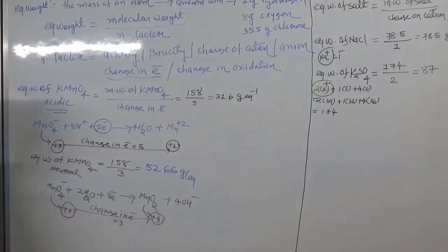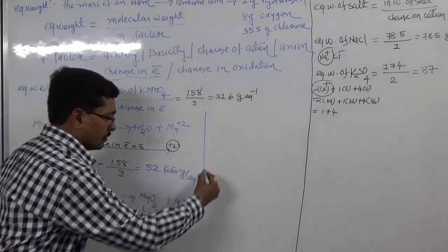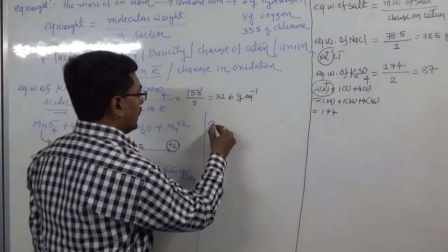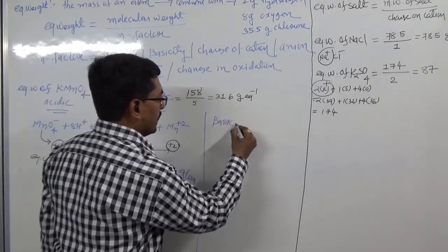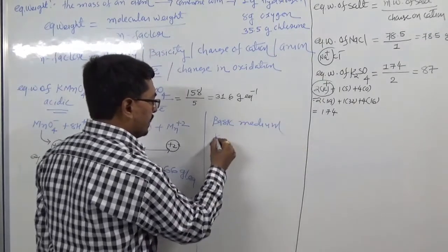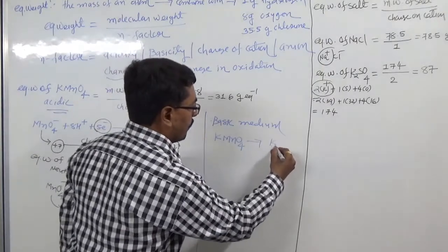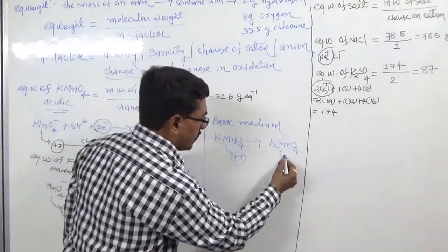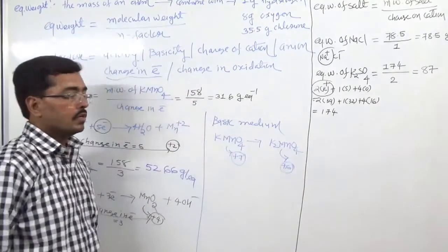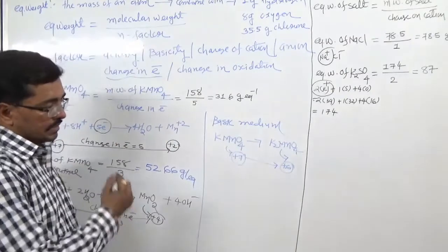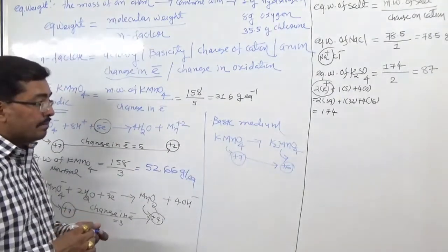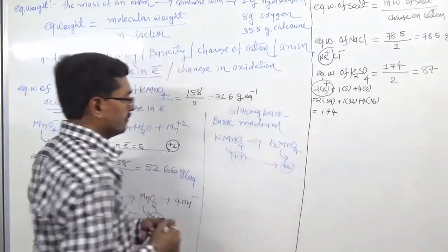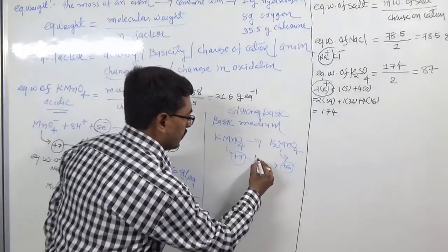In basic medium, KMnO₄ converts to K₂MnO₄ by taking one electron. Oxidation number of Mn in KMnO₄ is +7 and in K₂MnO₄ it is +6, so the change in electron is just 1. Therefore in strong basic medium, equivalent weight of KMnO₄ is 158 divided by 1, which equals 158 gram equivalent.